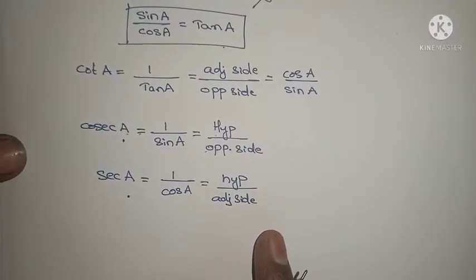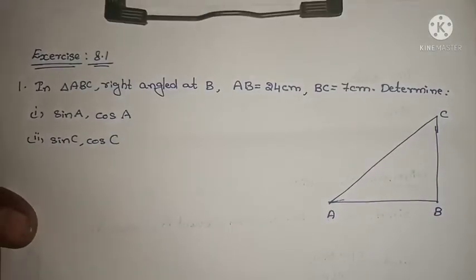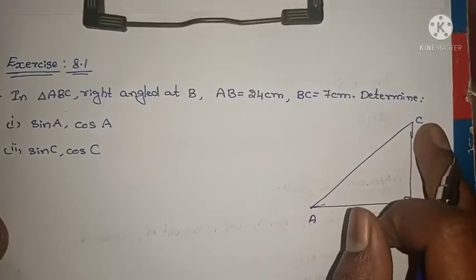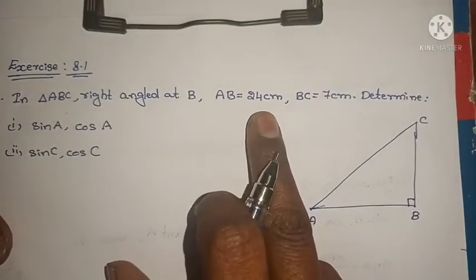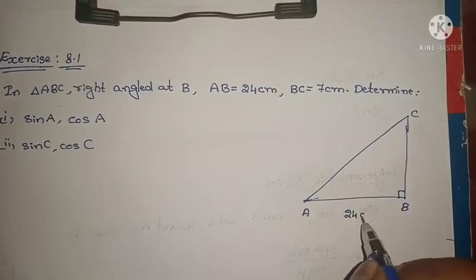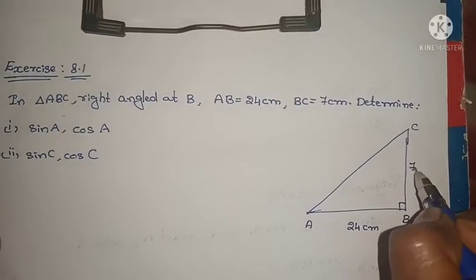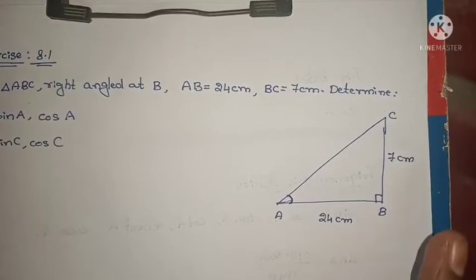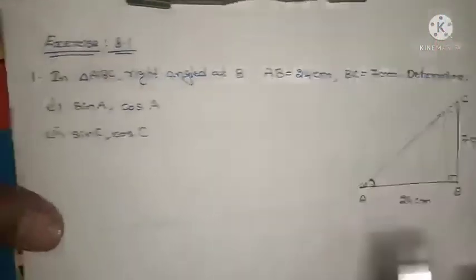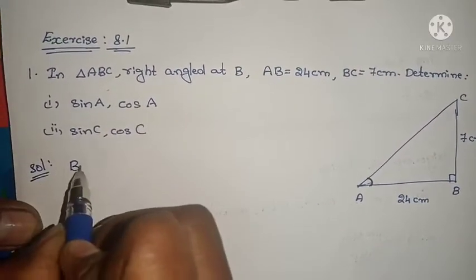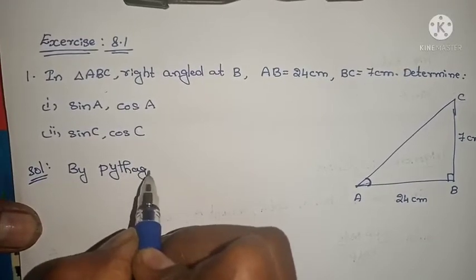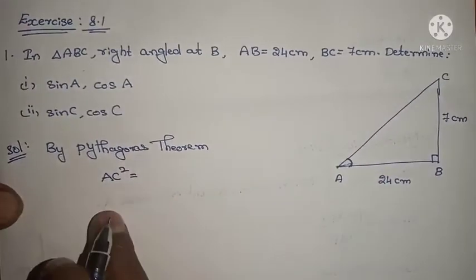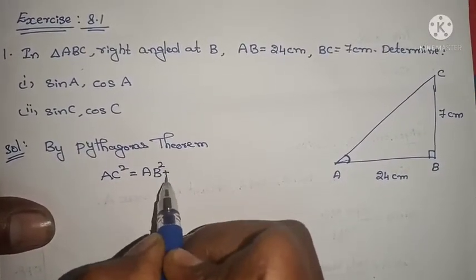Let us go to the exercise. Exercise 8.1, first problem. See the question — what is given? In triangle ABC, right angled at B. Since it is right angled at B, AC is the hypotenuse — it is opposite to the right angle. AB = 24 cm and BC = 7 cm. We have to determine sin A, cos A, sin C, and cos C. First, we need to find the hypotenuse. By solution, using Pythagoras theorem: